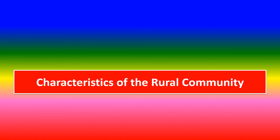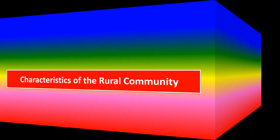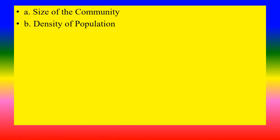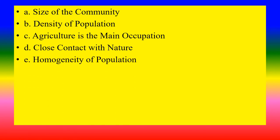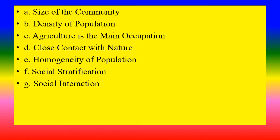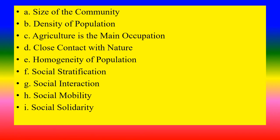Characteristics of rural community: A. Size of community; B. Density of population; C. Agriculture is the main occupation; D. Close contact with nature; E. Homogeneity of population; F. Social stratification; G. Social interaction; H. Social mobility; I. Social solidarity; J. Joint family.